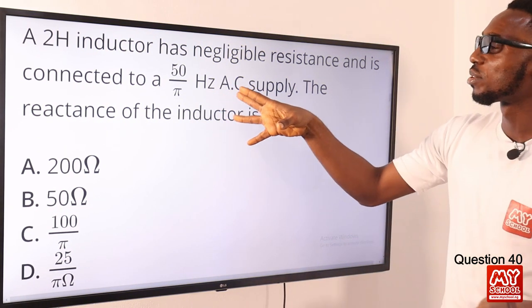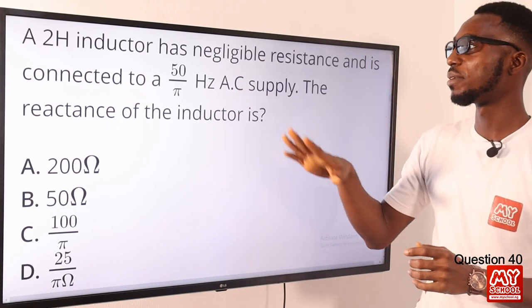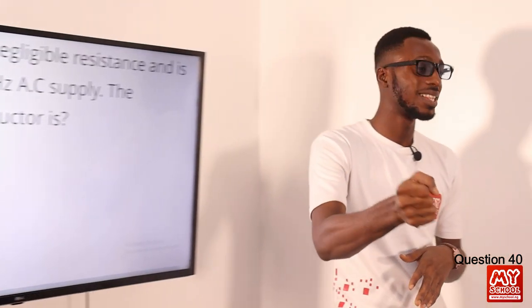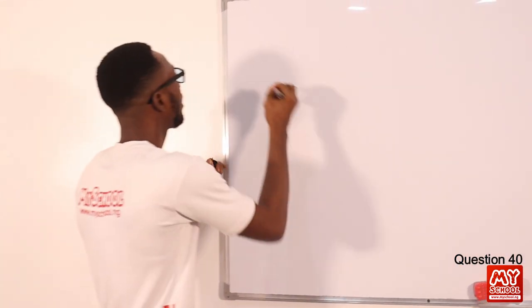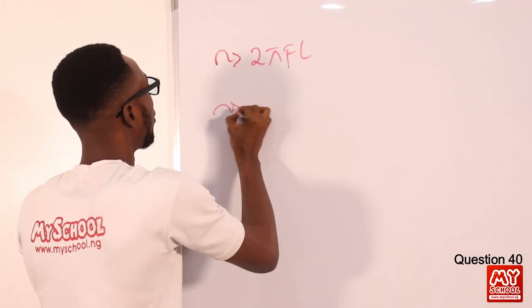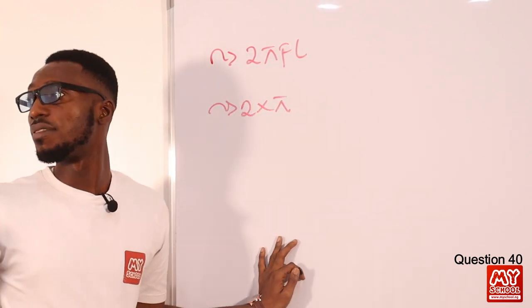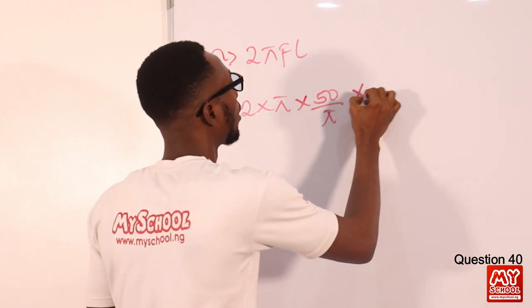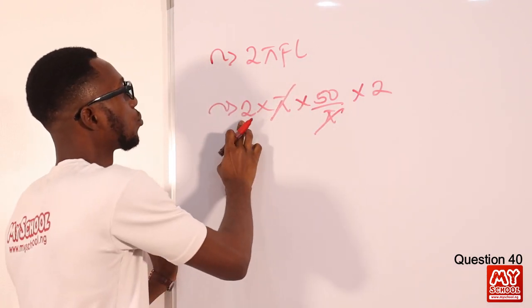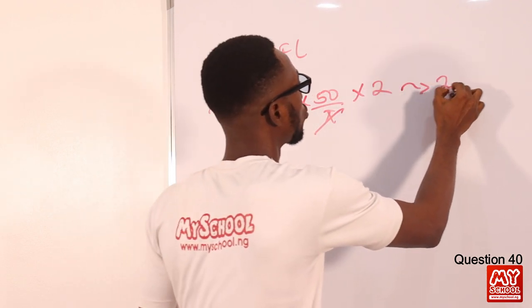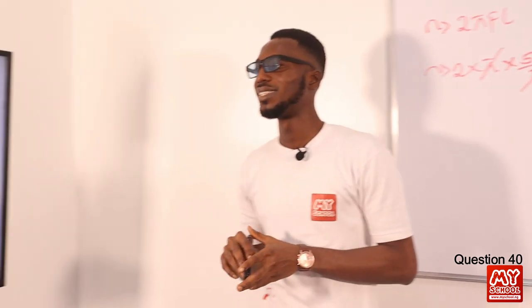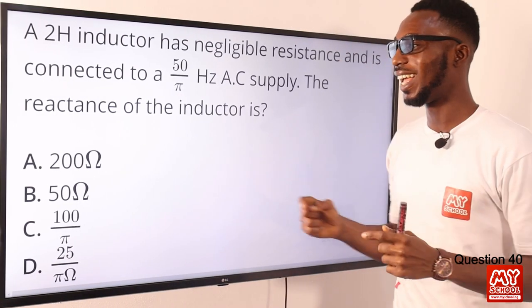Question 40: a 2-henry inductor has negligible resistance and is connected to a 50/π Hz AC supply. The inductive reactance is X_L = 2πfL = 2π × (50/π) × 2. The π cancels, giving 2 × 50 × 2 = 200 ohms. Option A is the valid option. That brings us to the end of this video lesson.